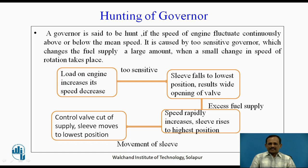This results in the speed increasing rapidly. Due to the increase in speed, the sleeve rises to its highest position, which results in cutting down the supply of working fluid to the engine. So in hunting, the governor either admits a large amount of working fluid to the engine or cuts down the supply. That is called hunting of a governor.